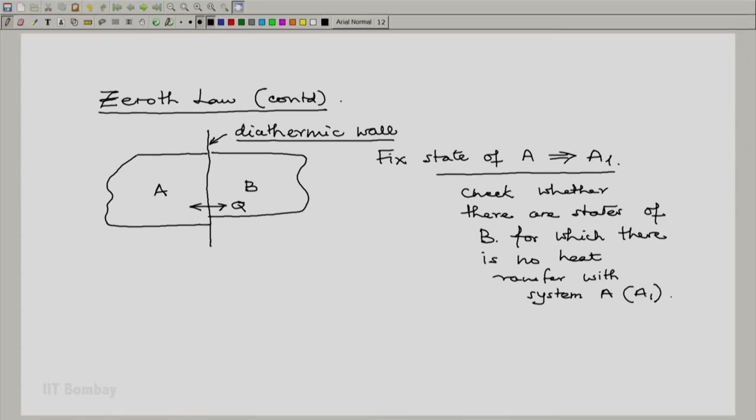Let us sketch simple state spaces for the two systems. This is the state space of system A, this is the state space of system B. Let us say, if both are fluid systems, pressure and volume are appropriate: PA, VA, PB, VB.